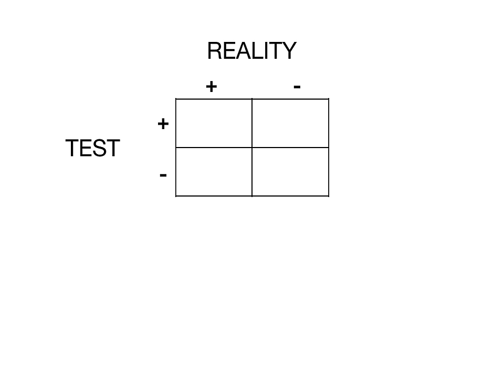Now let's start filling in the boxes specifically. Looking at the top left box: if in reality it's positive, meaning you actually have a disease, and the test says it's positive as well, that is a true positive. For example, if you actually have cancer and a test for lung cancer comes back positive, that's a true positive because you do actually have cancer.